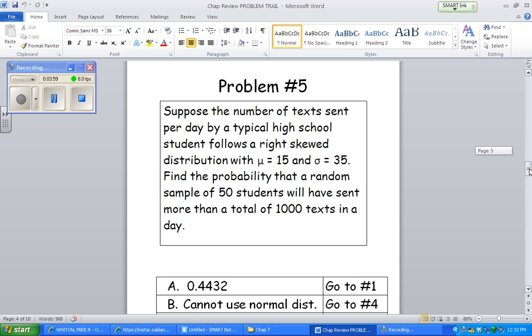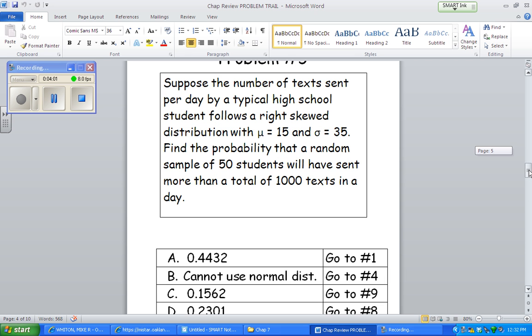All right, problem five, number of texts sent per day is right skewed with a mean of 15, standard deviation 35. Find the probability that a random sample of 50, okay, so there's an n value, n is 50. We'll have sent more than a total of, okay, this is kind of the key here, it's a little bit of, they worded things a little differently.